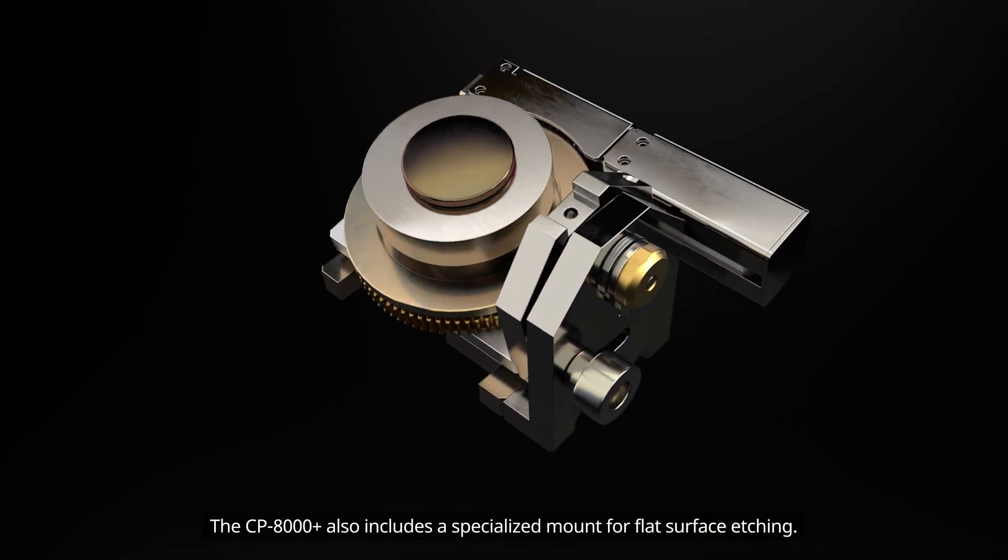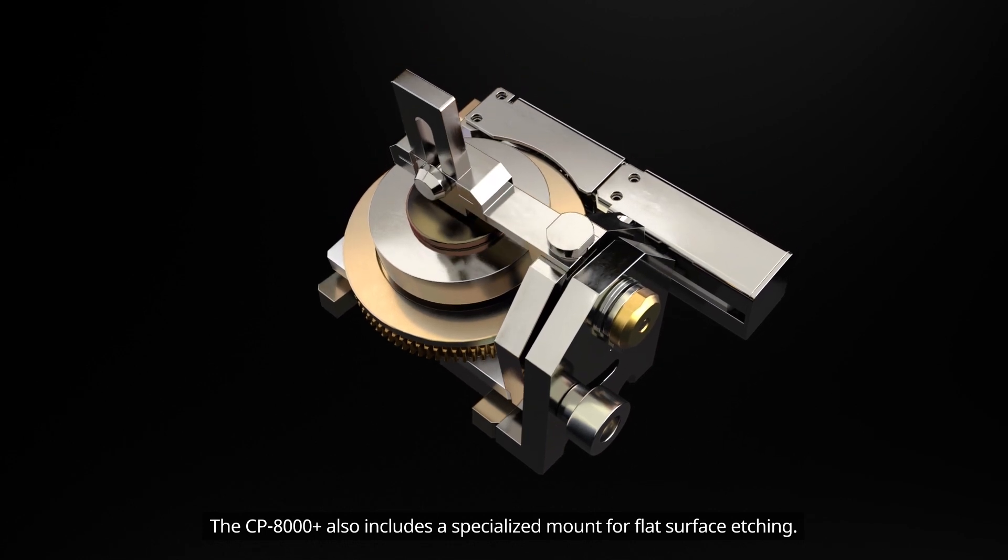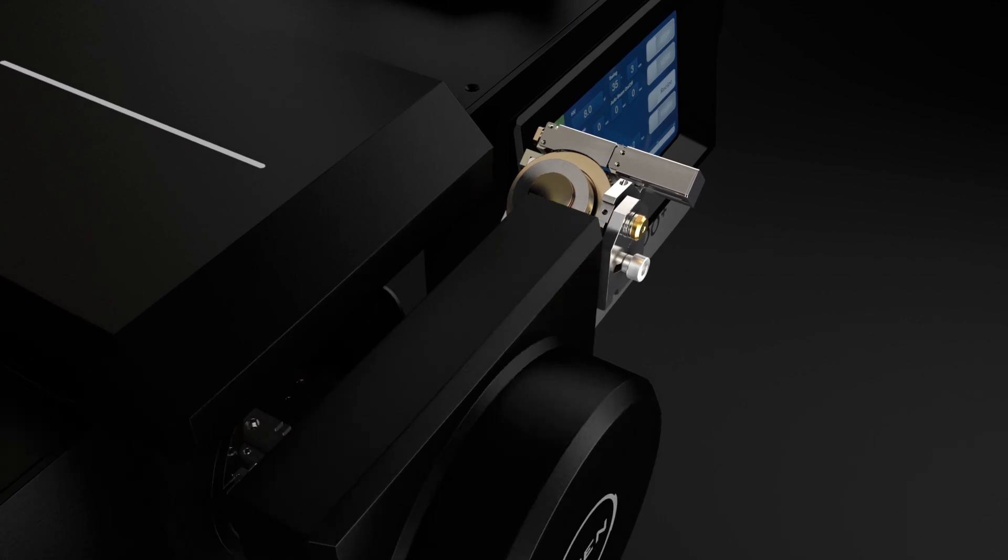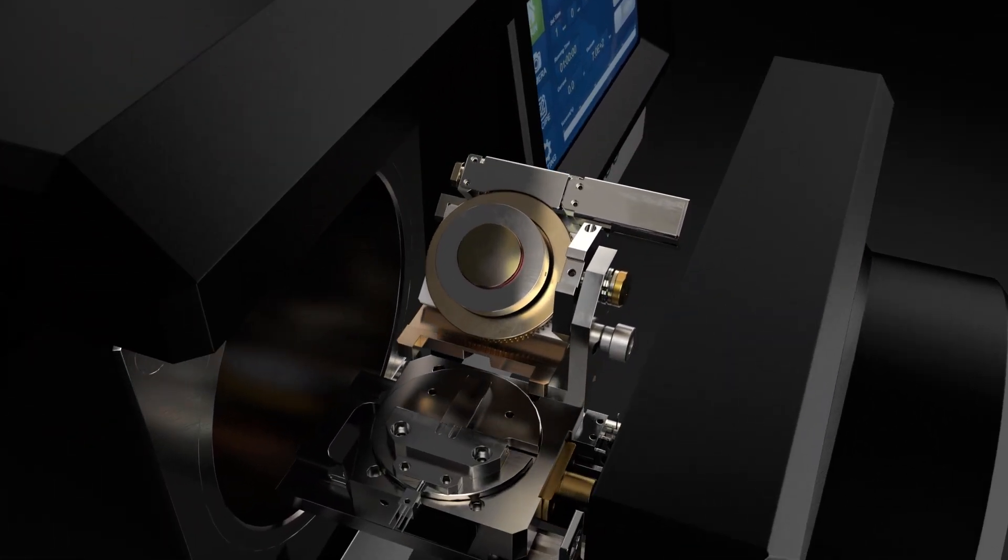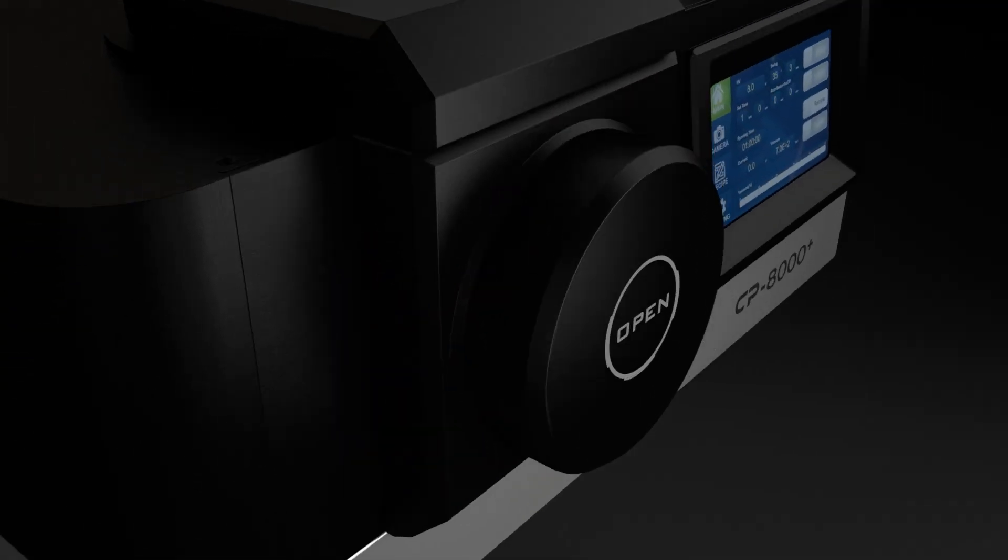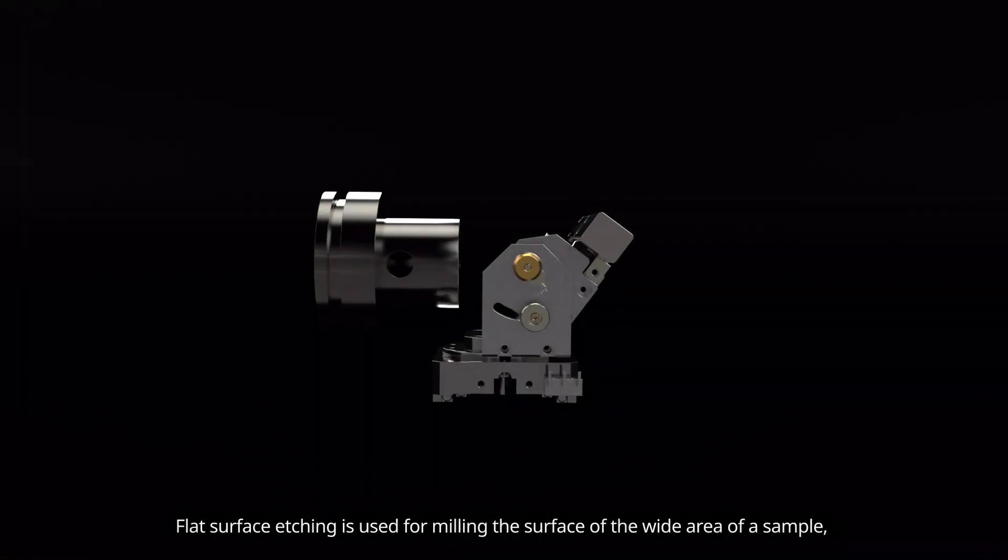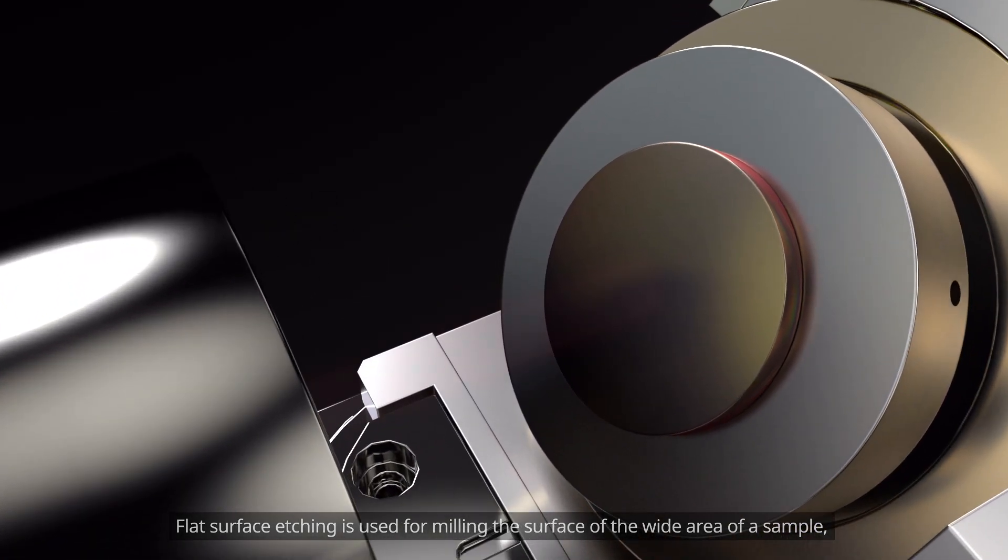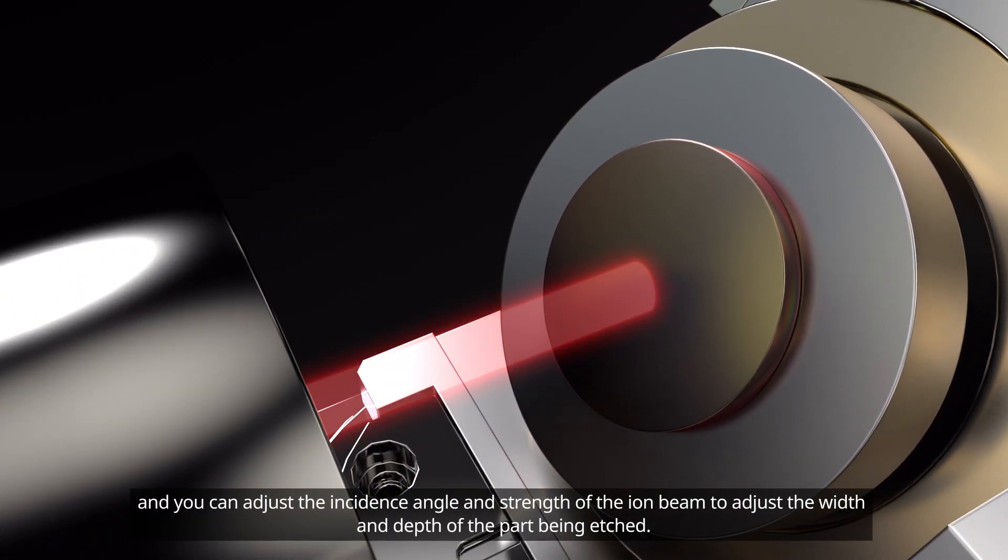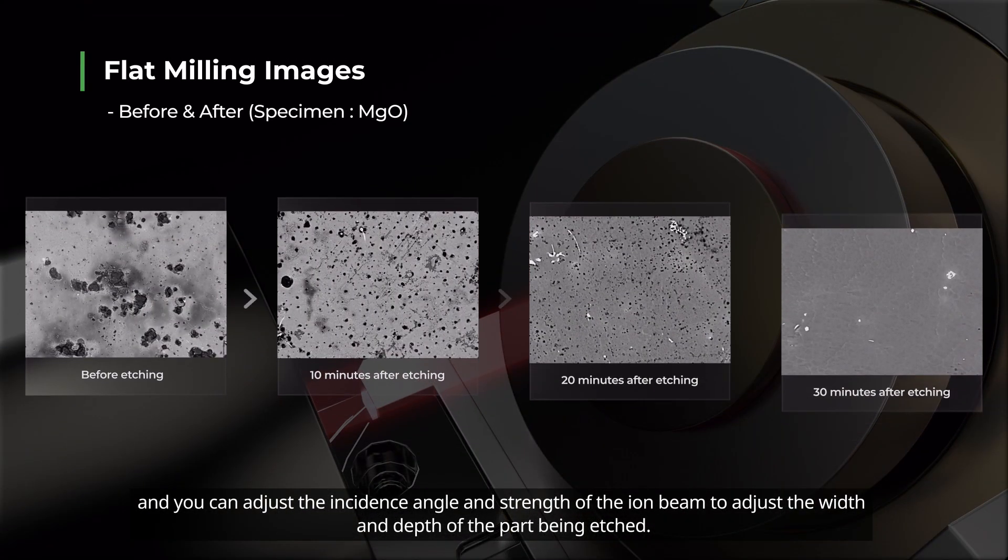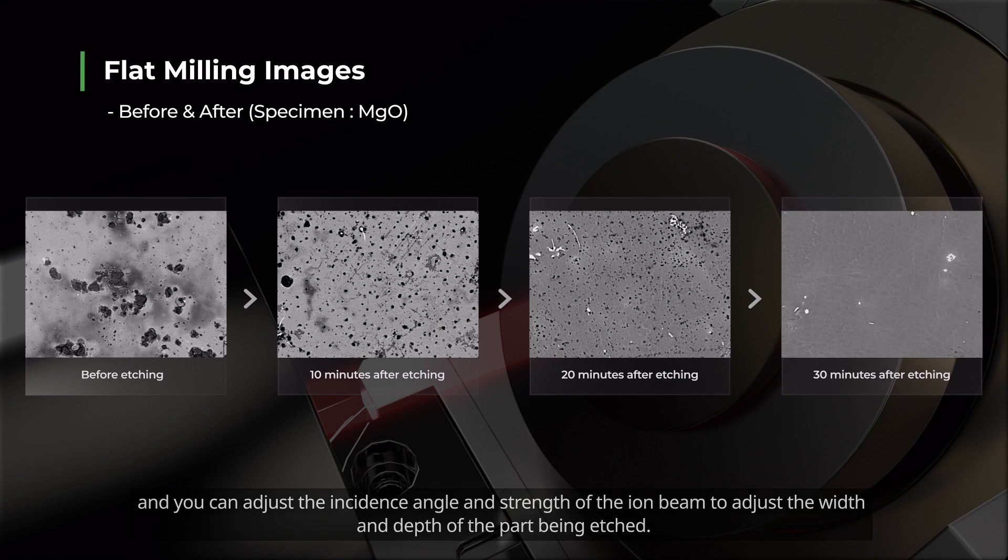The CP8000PLUS also includes a specialized mount for flat surface etching. Flat surface etching is used for milling the surface of a wide area of a sample, and you can adjust the incidence angle and strength of the ion beam to adjust the width and depth of the part being etched.